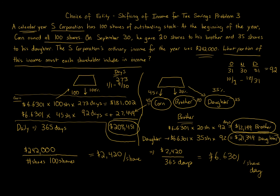To summarize the method: take the daily per-share income amount, multiply by the number of shares held, and multiply by the number of days in that ownership period. For Corn, we had to add two periods together. Remember to use four decimal places for the daily per-share rate, and round to the nearest whole dollar for each shareholder's final allocated income amount.